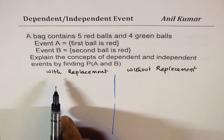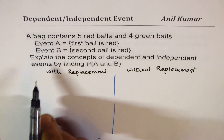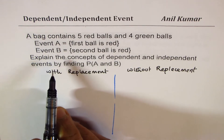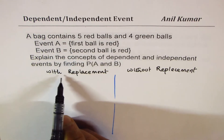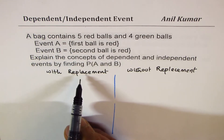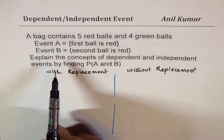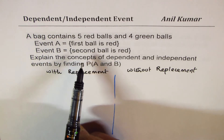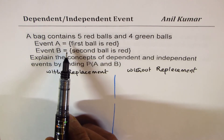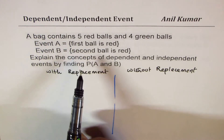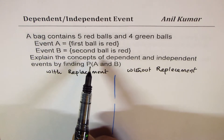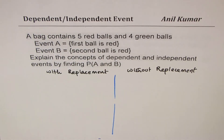In the first case, if we do the operation of selecting two balls randomly with replacement, then the probability of selecting the first ball and the probability of selecting the second ball both remain the same, since we have replaced the balls.